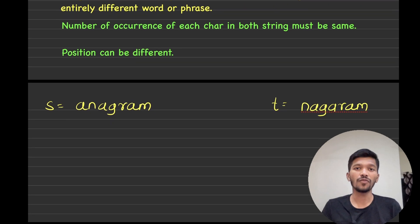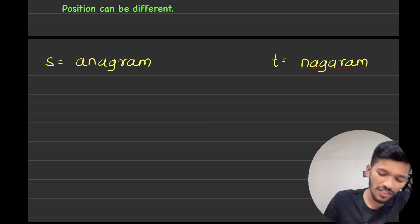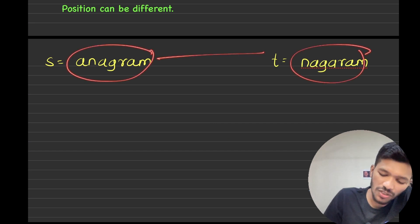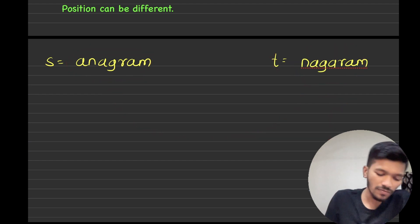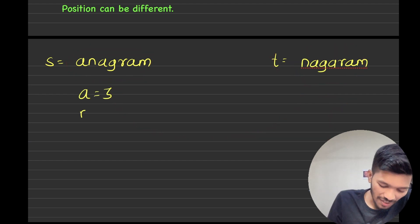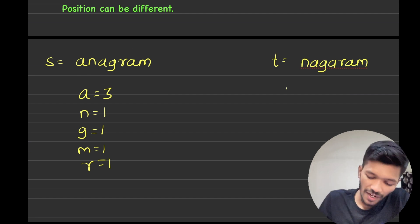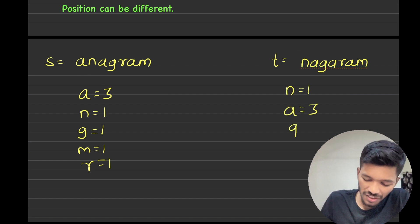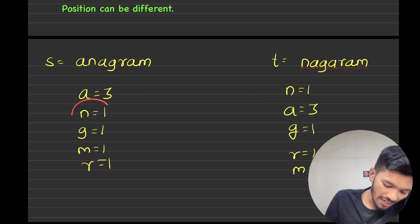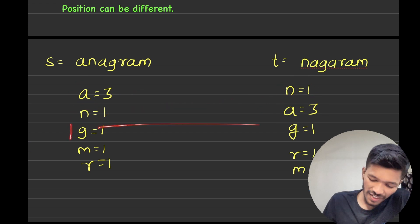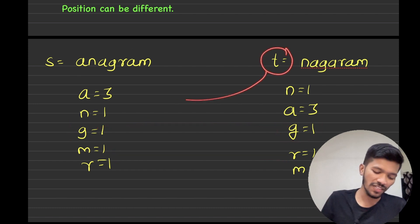So I need to return true if both strings are anagrams of each other, otherwise return false. This string t is an anagram of string s because t is obtained from s — the position of each character is different but their occurrence is the same. 'a' occurs three times, 'n' once, 'g' once, 'm' once, and 'r' once in s. In t, 'n' once, 'a' three times, 'g' once, 'r' once, 'm' once — the occurrences match exactly, confirming t is generated using the characters of s.